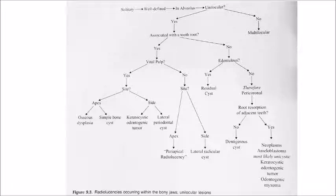If it is a unilocular lesion associated with the tooth root without a vital pulp — that is, the pulp is non-vital — then it can be a periapical radiolucency such as a periapical cyst or granuloma. If it is towards the side of the root, it can be a lateral radicular cyst. Commonly it will be a periapical radiolucency like a periapical cyst or granuloma.